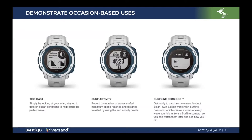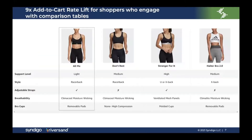Let's look at a watch. I show a product in occasion-based uses — so when do you use it? For example, tying data to when you're surfing: the surf activity, the mode. Am I a runner, a surfer, or a cyclist? So it gives you the occasion-based use.